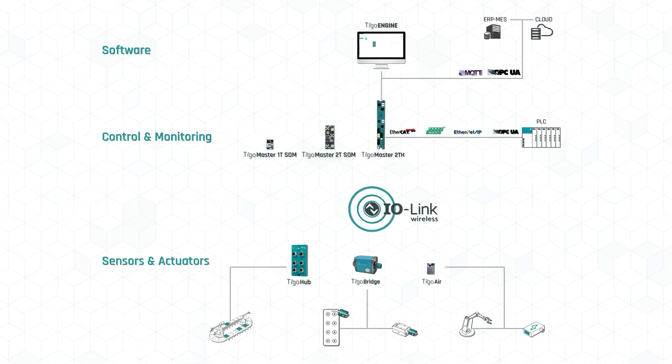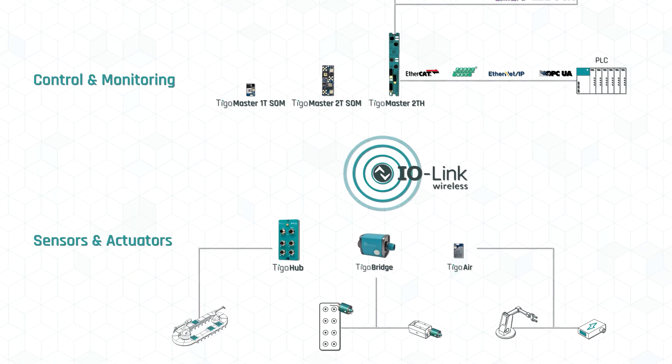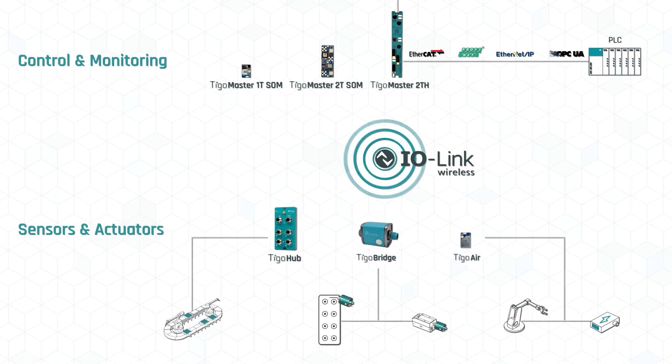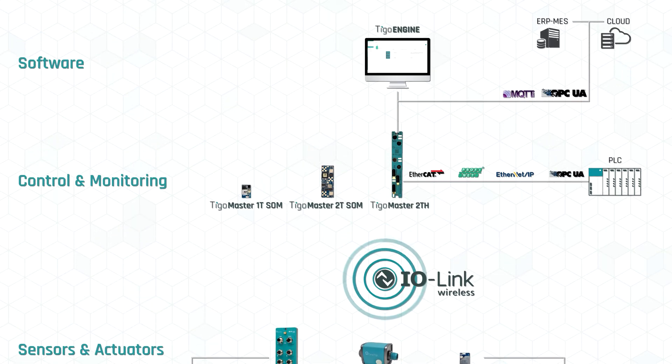Cortigo provides a complete wireless connectivity solution from the devices through the master all the way to the PLC and enterprise applications.